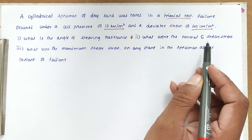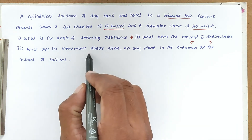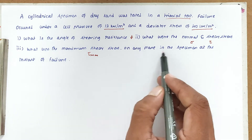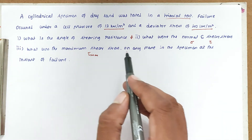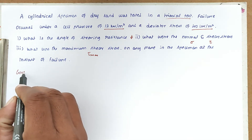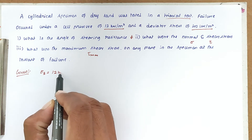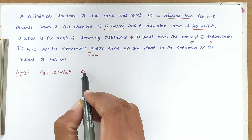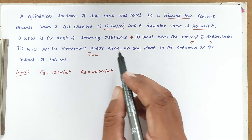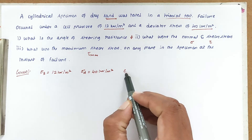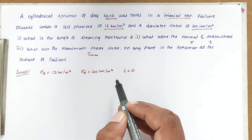We have to find: (1) the angle of shearing resistance φ, (2) the normal stress σ and shear stress τ on the failure plane, and (3) the maximum shear stress τ_max on any plane in the specimen at the instant of failure. The given values are: σ3 = 12 kN/m², deviator stress σD = 40 kN/m², and since this is sand, C = 0.